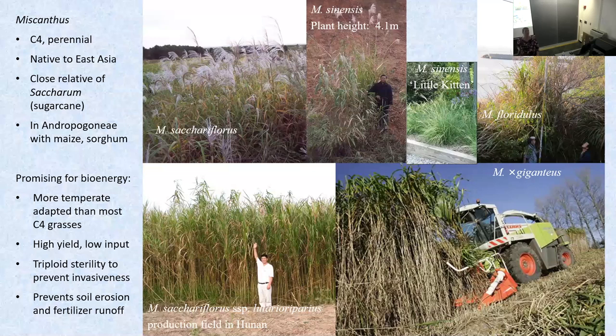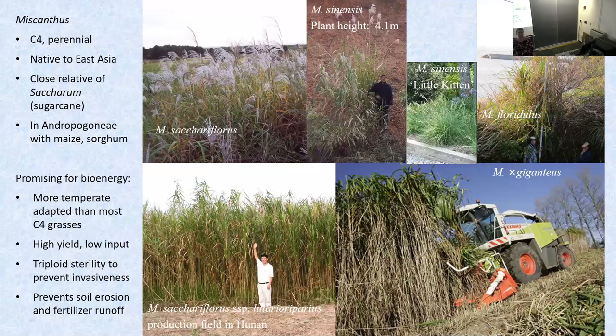Miscanthus, if you're not familiar with it, is a C4 grass that's a perennial native to East Asia, with a very broad distribution there. It's a close relative of sugarcane, putting it within the Andropogoneae tribe with maize and sorghum. We're interested in it for bioenergy because as a C4 grass, it does photosynthesis very efficiently.